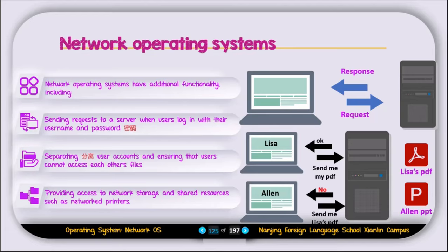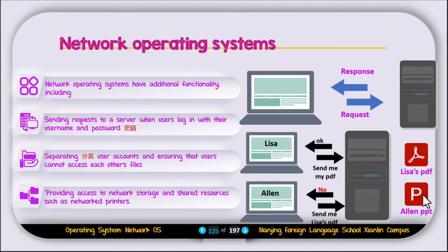For example, we have two users, Lisa and Ellen, and their files are stored on a server. If Lisa tries to access her PDF file, the server gives access to Lisa. But if Ellen tries to access Lisa's PDF, the server responds with no, because that PDF belongs to Lisa, not Ellen. Similarly, if Lisa tries to access Ellen's PPT, it won't be possible because the server will not give access — that PPT belongs to Ellen.